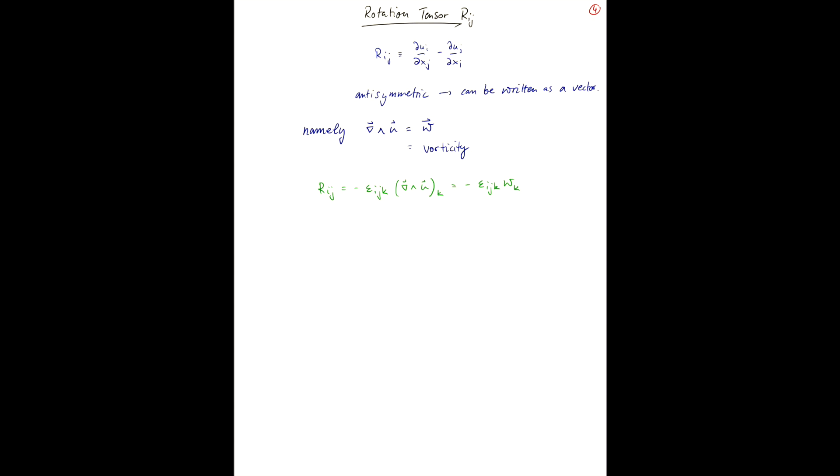And the components of omega are omega_1 equals du3/dx2 minus du2/dx3, omega_2 is du1/dx3 minus du3/dx1, and omega_3 is du2/dx1 minus du1/dx2.